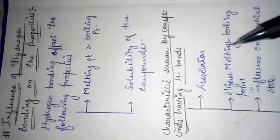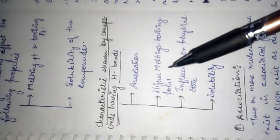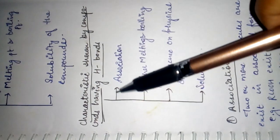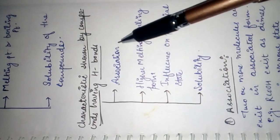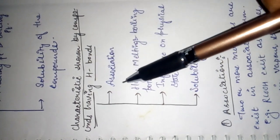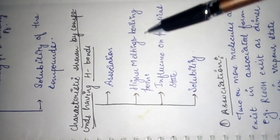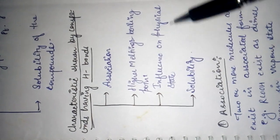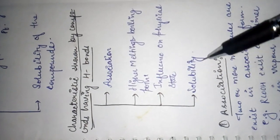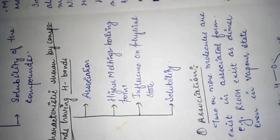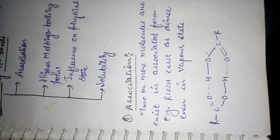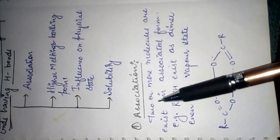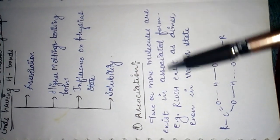Hydrogen bonding also affects solubility of compounds. The characteristics shown by compounds having hydrogen bonds are: first, association; higher melting and boiling points; influence on physical state; and solubility. The first property we are discussing is association — two or more molecules exist in an associated form.